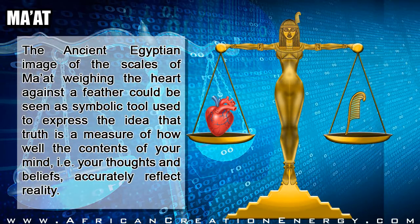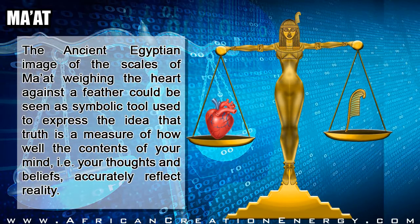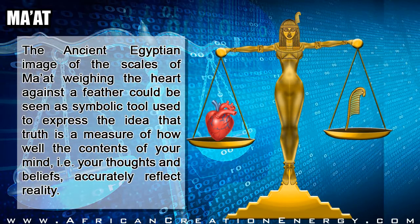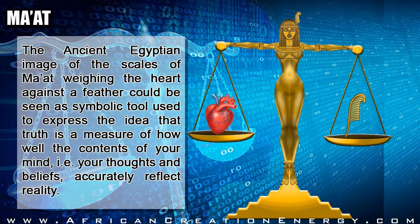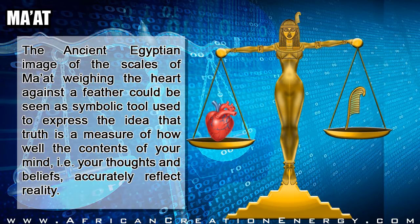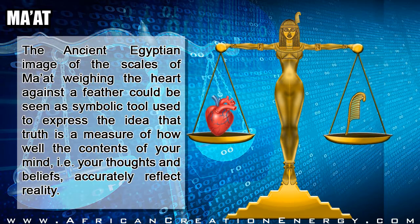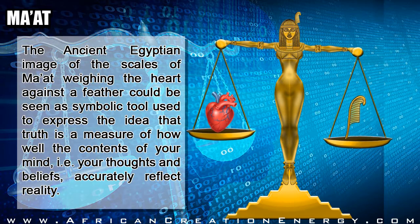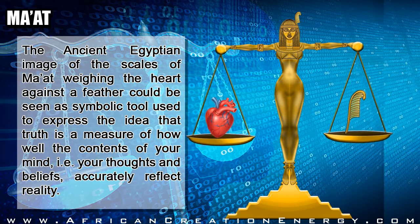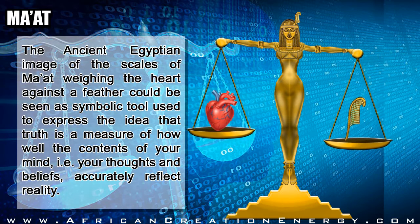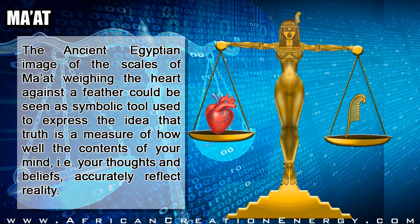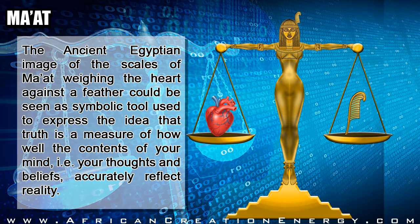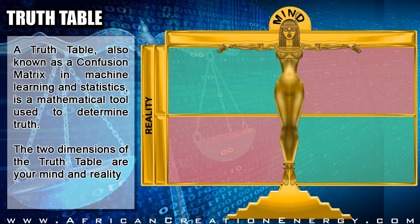Even to this very day we colloquially associate feelings with our heart, when in actuality, scientifically, we experience feelings in our brain. The ancient Egyptian image of the scales of Ma'at weighing the heart against a feather could be seen as a symbolic tool used to express the idea that truth is a measure of how well the contents of your mind — i.e., your thoughts and beliefs — accurately reflect reality.